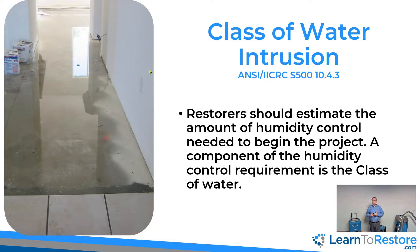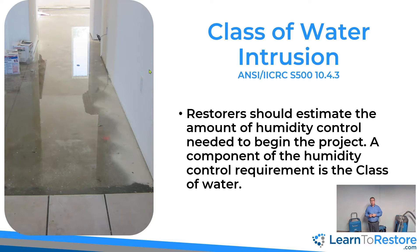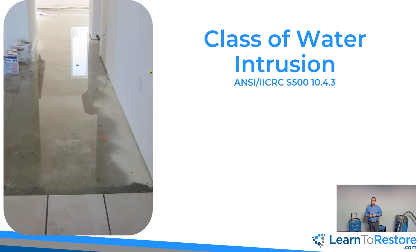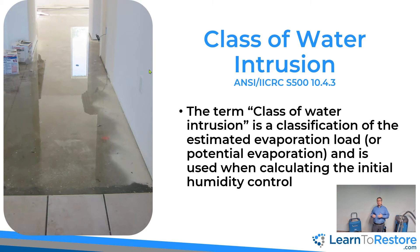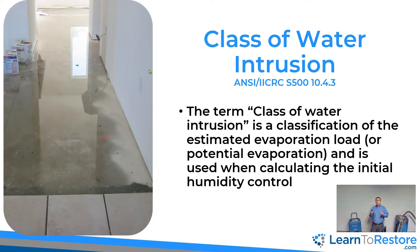The S500 tells us that as restorers, we should estimate the amount of humidity control needed at the beginning of a project. This is largely determined by the class of water. The term class of water has to do with the potential rate of evaporation, or what we call the evaporation load — in other words, how much water vapor is loading up into the air based on the types of materials that are wet and how wet they are; how much water is going to come up into the air that needs to be ventilated to the outside or dehumidified.